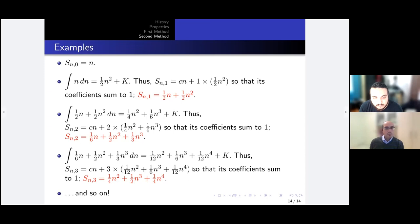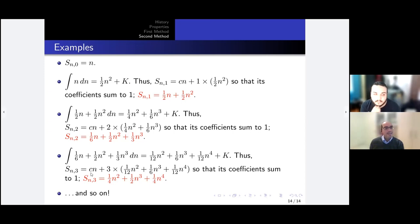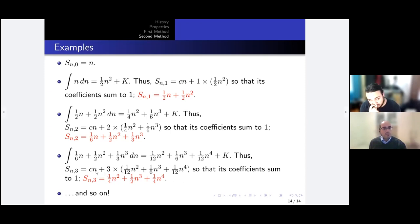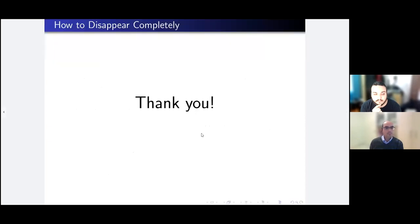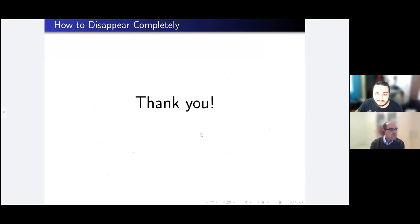As you can see, it's very simple to find the sum of the fourth power using this method: integrate the formula for the sum of cubes, multiply by 4, add C·n, and ensure the coefficients sum to 1. I hope you have enjoyed my talk. Thank you so much.